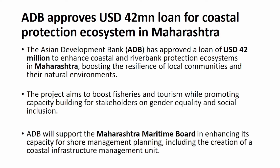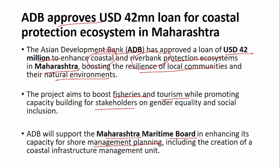Next: ADB — Asian Development Bank — has approved a loan of $42 million to Maharashtra to boost the resilience of local communities and their natural environment. This will enhance coastal and riverbank protection ecosystems. The main aim of this project is to boost fisheries and tourism while promoting capacity building for stakeholders and supporting the Maharashtra Maritime Board in shore management planning. Remember the amount: $42 million from ADB for coastal protection ecosystem in Maharashtra.